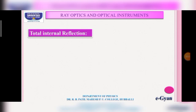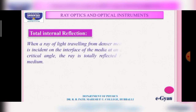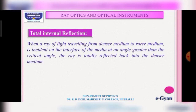Total internal reflection: for a ray of light to undergo total internal reflection, the ray must travel from a denser medium to a rarer medium. If the ray travels from rarer medium to denser medium, there is no total internal reflection. When a ray of light travels from denser to rarer medium and is incident on the interface at an angle greater than the critical angle, the ray is totally reflected back into the denser medium.